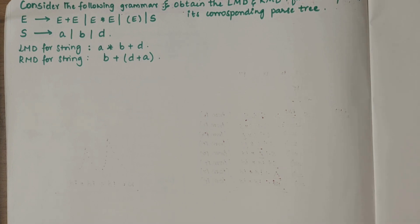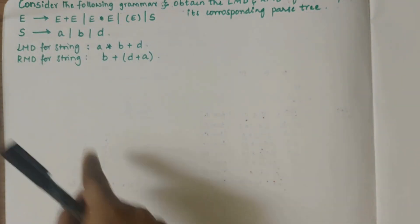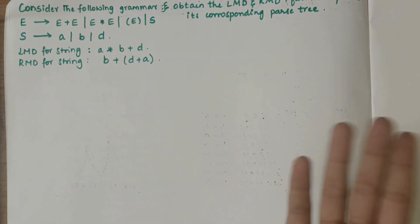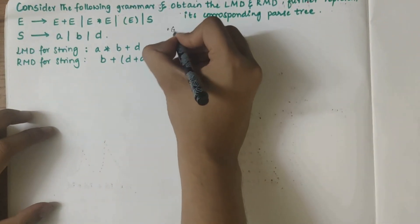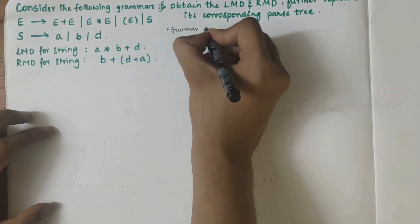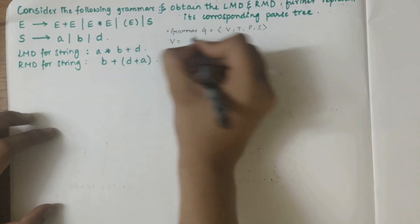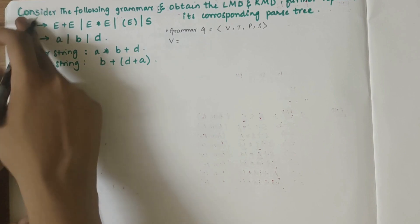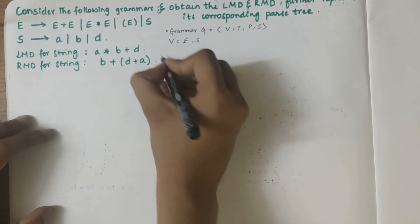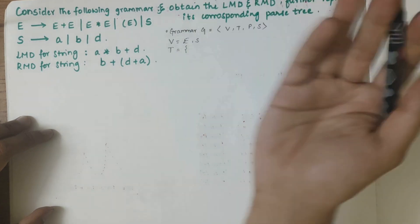In this video we'll be solving a question where a grammar is given and we need to obtain LMD and RMD for the given respective strings, and represent them using the corresponding parse trees. Let's first define the grammar. Grammar G comprises of four tuples: V, T, P, S. V comprises of the non-terminals, which are E and S. T is the set of terminals.